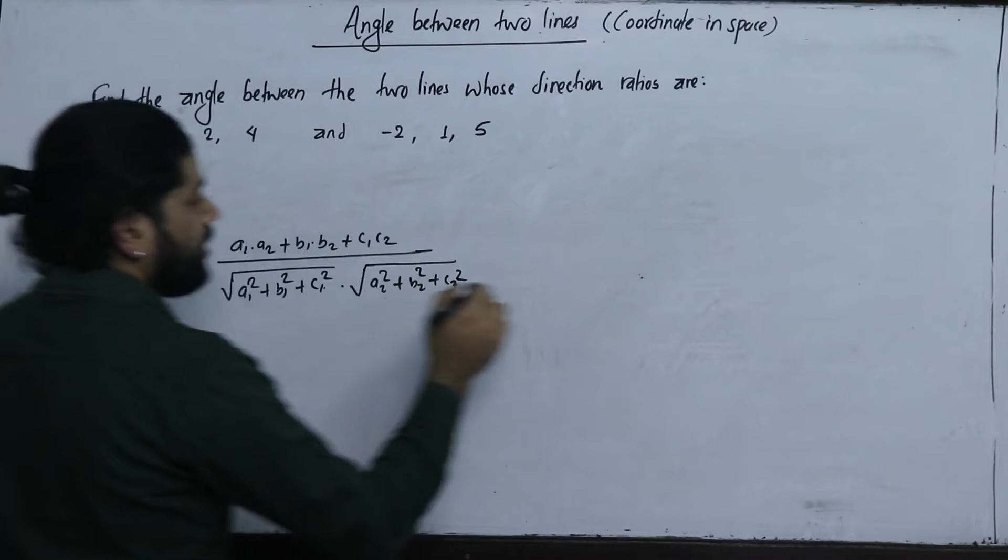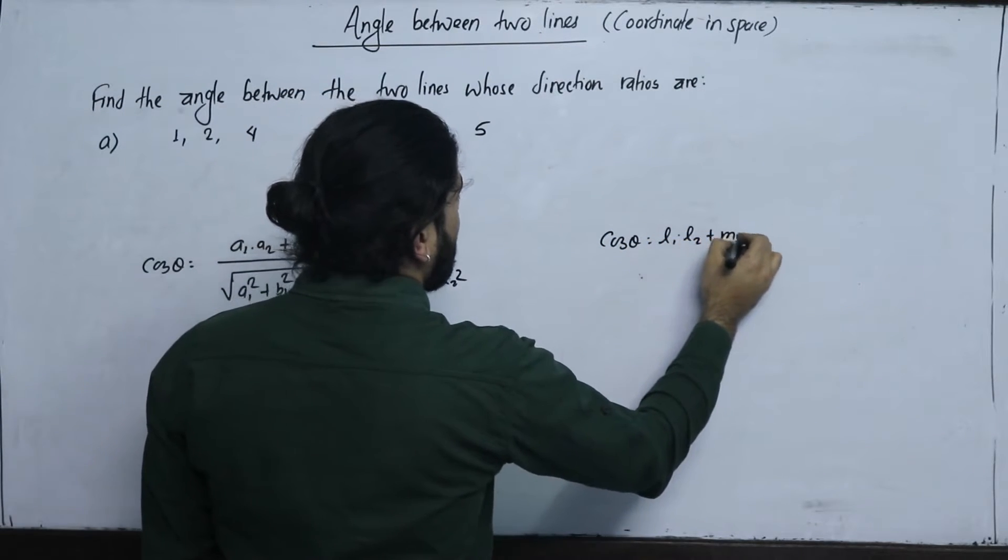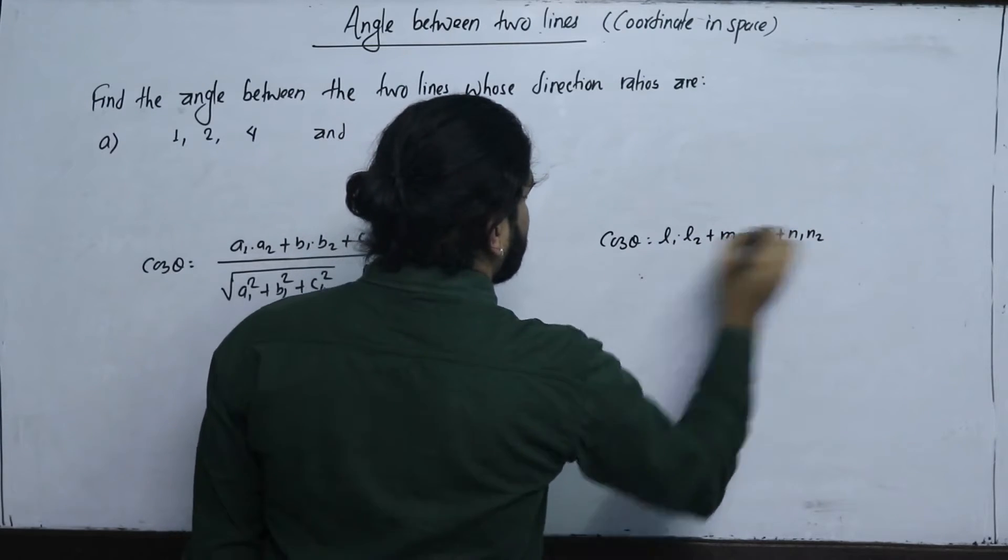And using direction cosines, cos theta equals L1 L2 plus M1 M2 plus N1 N2.